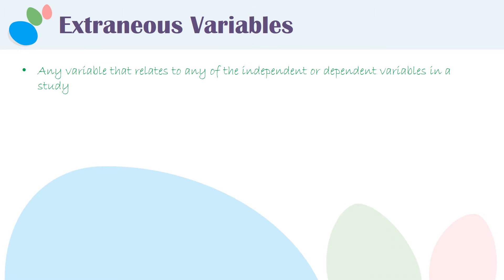An extraneous variable is any variable that relates to any of the independent or dependent variables in a study, and there are literally infinite extraneous variables for a study. You can always think of more variables that could relate to either the independent or the dependent variable, but let's look at some examples.